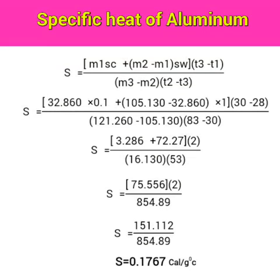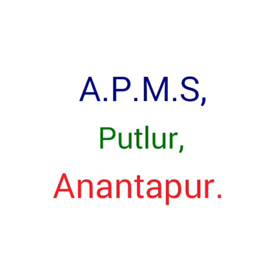It should be noted that the specific heat of copper is 0.1 calorie per gram per degree Celsius and the specific heat of water is 1 calorie per gram per degree Celsius. On simplification, we will get the specific heat of aluminum as 0.1767 calorie per gram per degree Celsius.